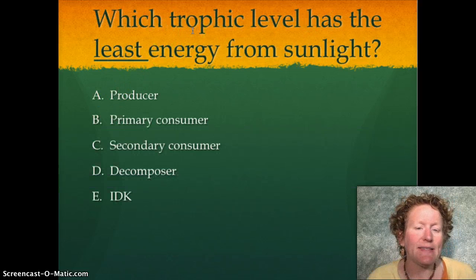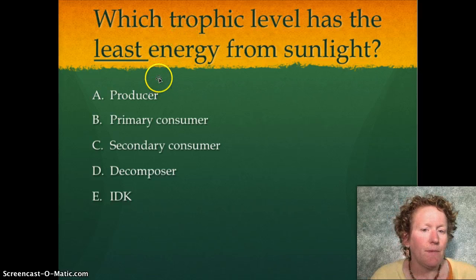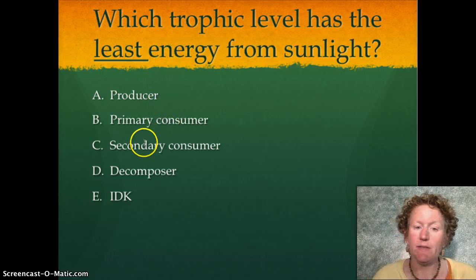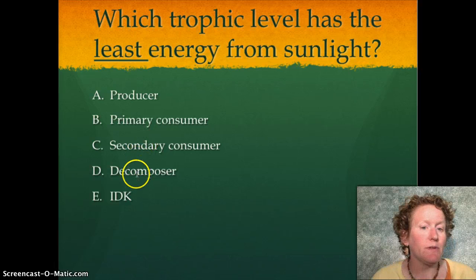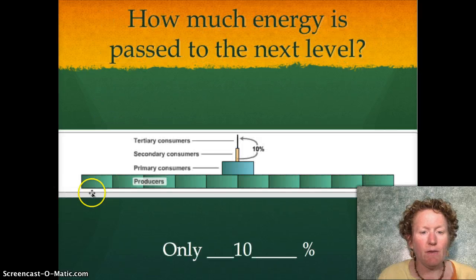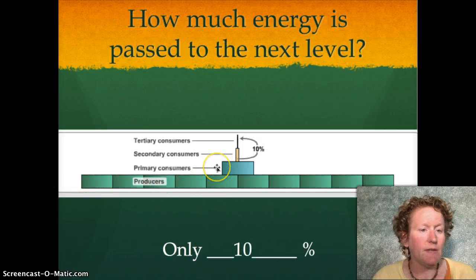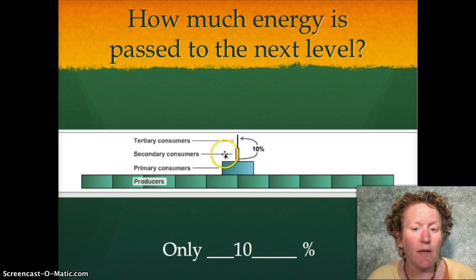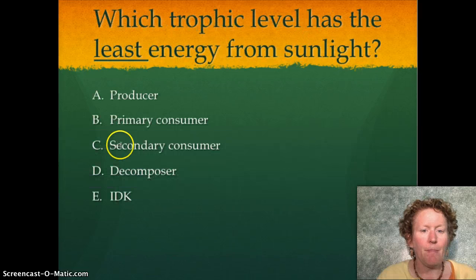Which trophic level has the least energy from sunlight — a producer, a primary consumer, a secondary consumer, a decomposer, or I don't know? Given our options, they didn't have tertiary consumer on the list, so secondary consumer is as high as we had, and that would be a good answer.